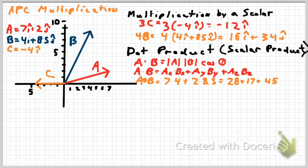So a dot b is 45, with that b dot a will also be 45. It's a scalar.